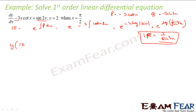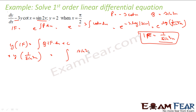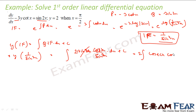The solution is y times IF equals the integral of q times IF dx plus c, giving y/sin³x equals the integral of sin(2x)/sin³x dx plus c. Since sin(2x) equals 2·sin(x)·cos(x), substituting gives 2·sin(x)·cos(x)/sin³x, which simplifies — one sin cancels — to 2·cos(x)/sin²x, that is 2·cot(x)·csc(x). So this becomes the integral of 2·cos(x)/sin²x dx plus c.